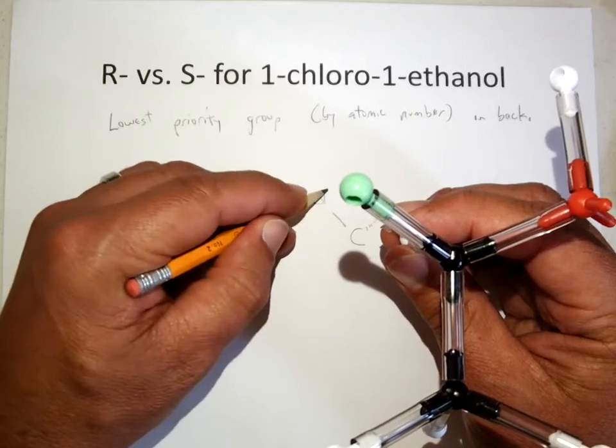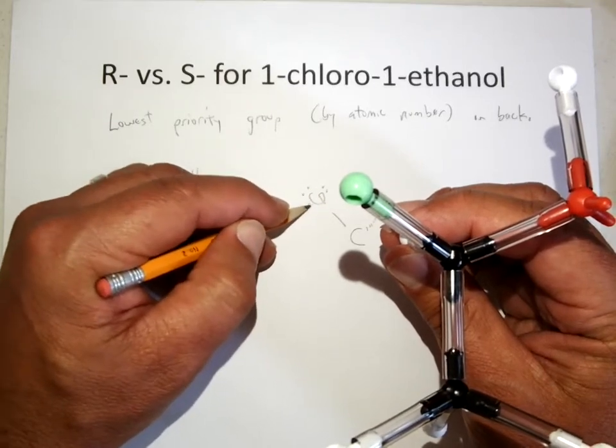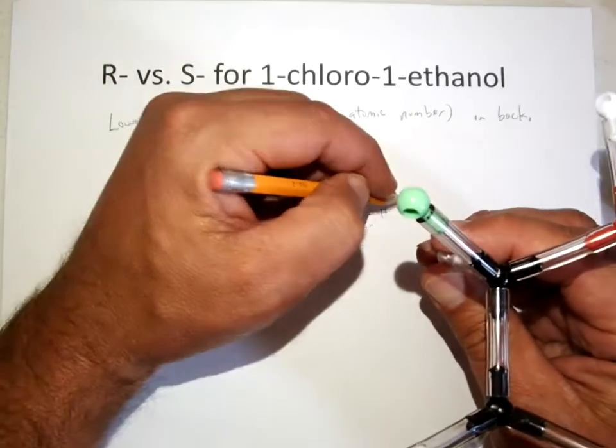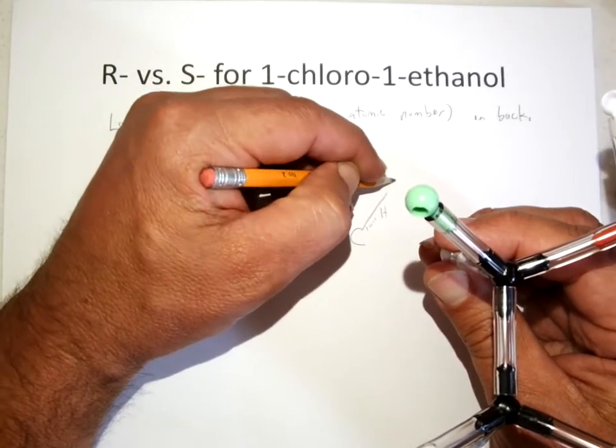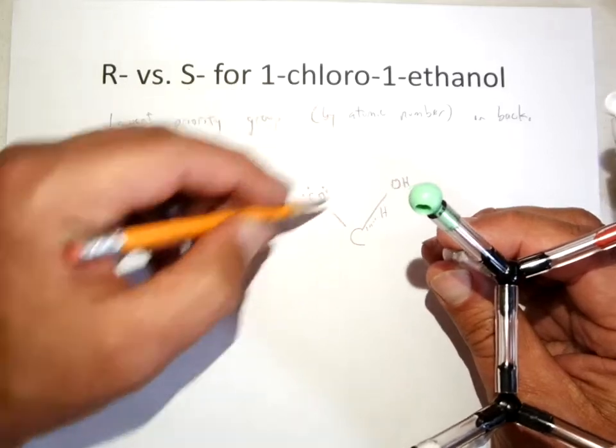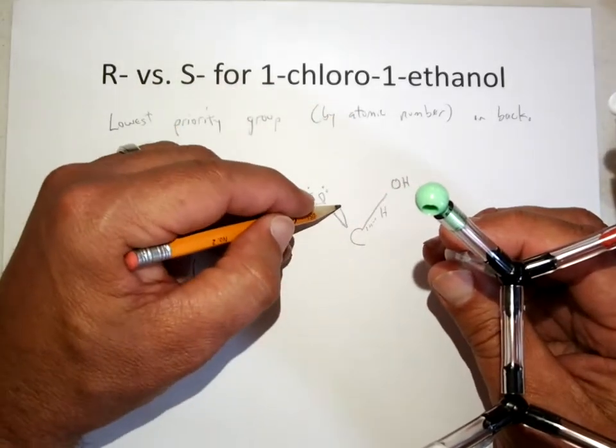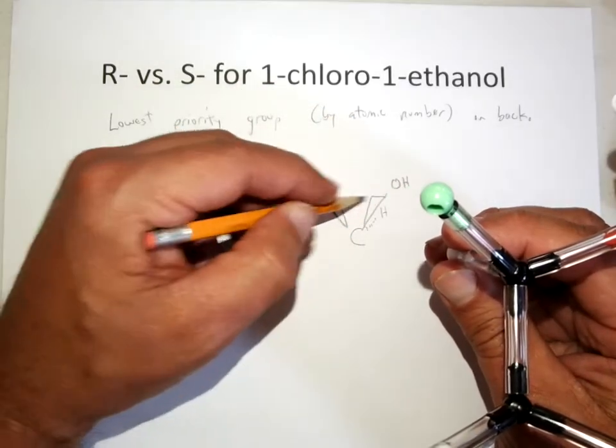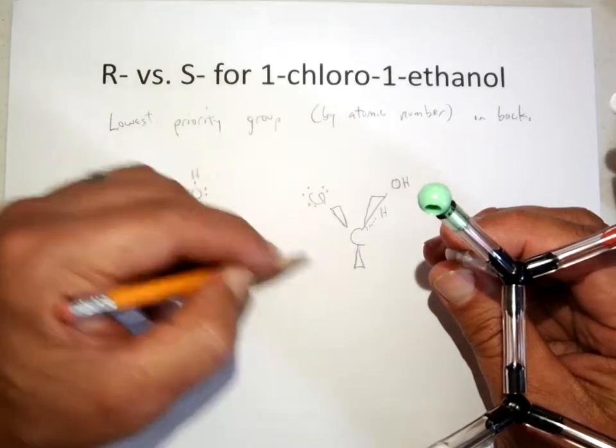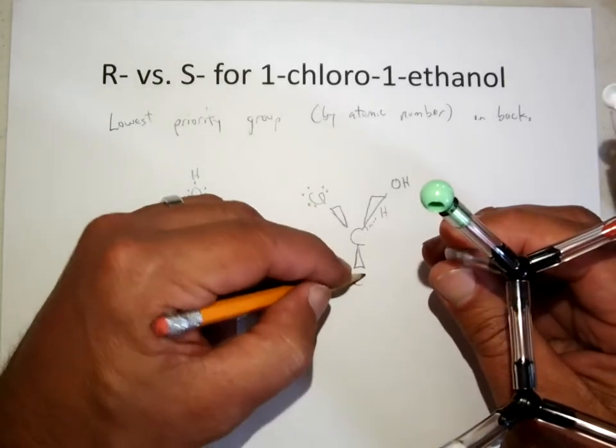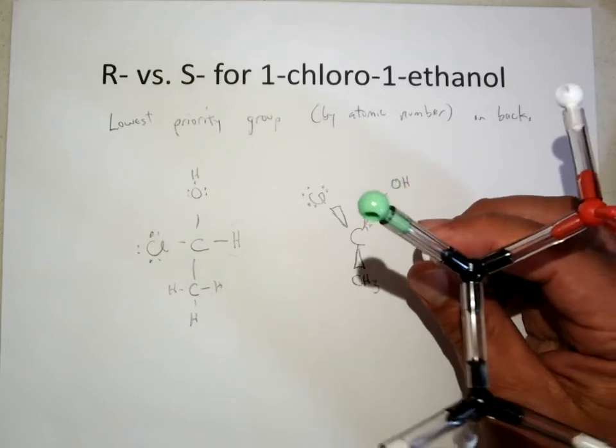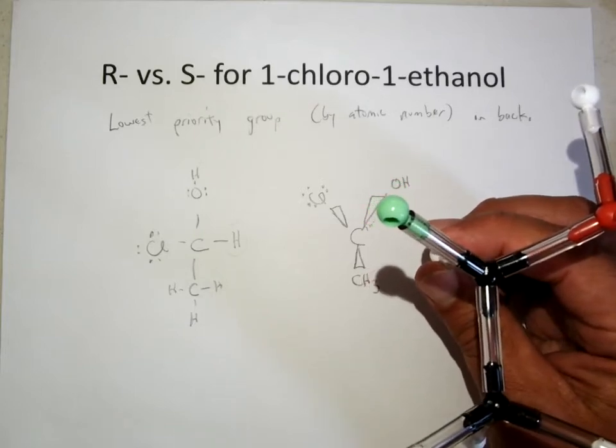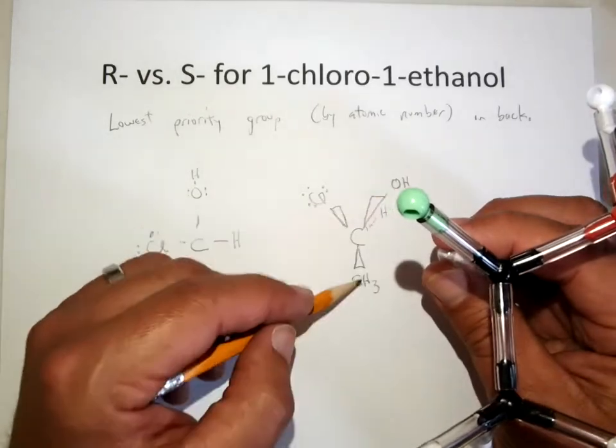Now I can see the chlorine is up and to the left. The OH group is up and to the right. And these are coming towards us, so I should use these wedges to show that those are coming towards us. And the methyl group is coming towards us as well. So if I hold the hydrogen in the back for this molecule, I see chlorine, OH, and CH3.